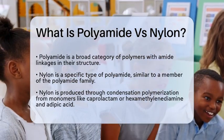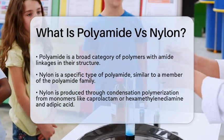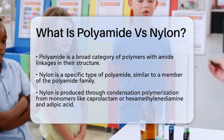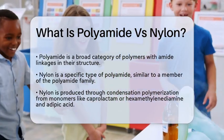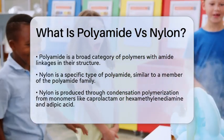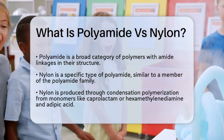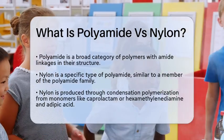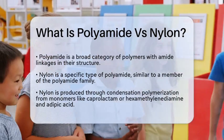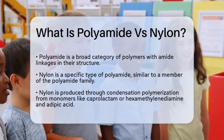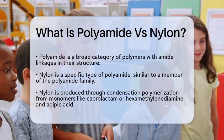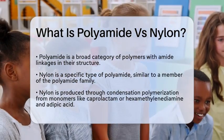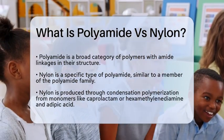First, let's start with the basics. Polyamide is a broad category of polymers that includes various types of materials. These polymers are characterized by the presence of amide linkages in their molecular structure. Think of amide linkages like strong bonds that give polyamides their unique properties.